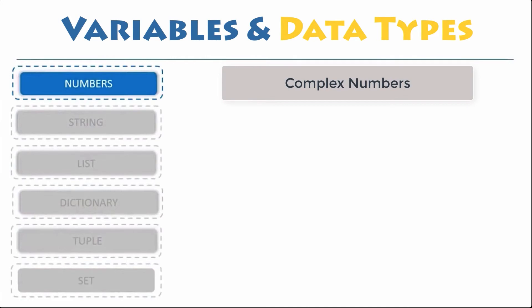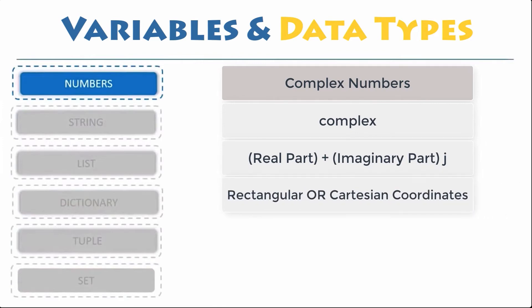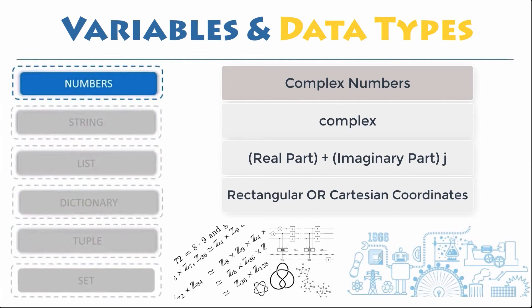Complex numbers. Complex numbers, represented by complex class, is written in the form real part plus imaginary part j. It is stored internally using either rectangular or Cartesian coordinates. It can be very useful if you are studying or working with mathematical functions or in engineering. For example, 2 plus 3j.